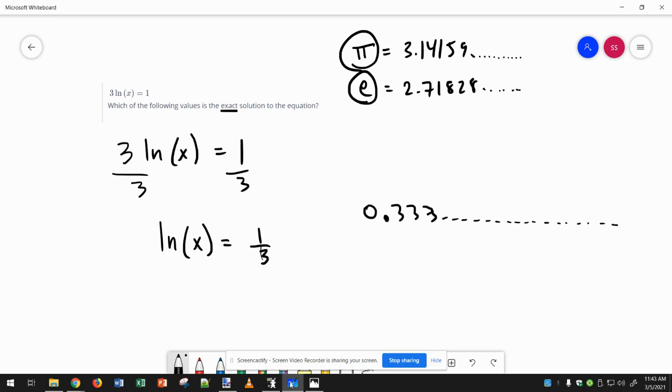Now to get rid of natural log, we exponentiate both sides. So then I get x equals E to the power of 1 third. And if I go to my calculator, I'm going to have to round that off. The calculator does not hold all of the digits. So this is the exact value, E to the power of 1 third.